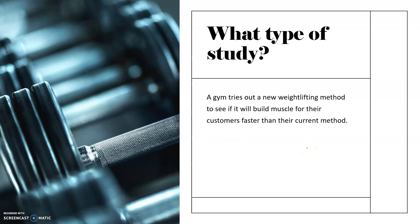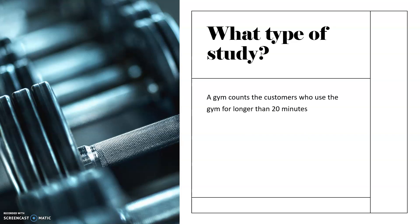A gym tries out a new weightlifting method to see if it will build muscle for their customers faster than their current method. They're changing what their customers do, so this is an experiment — they're studying to see if this method will change the results. A gym counts the customers who use the gym for longer than 20 minutes. This is observational because the gym can count their customers without asking them any questions or making any changes to their behavior.